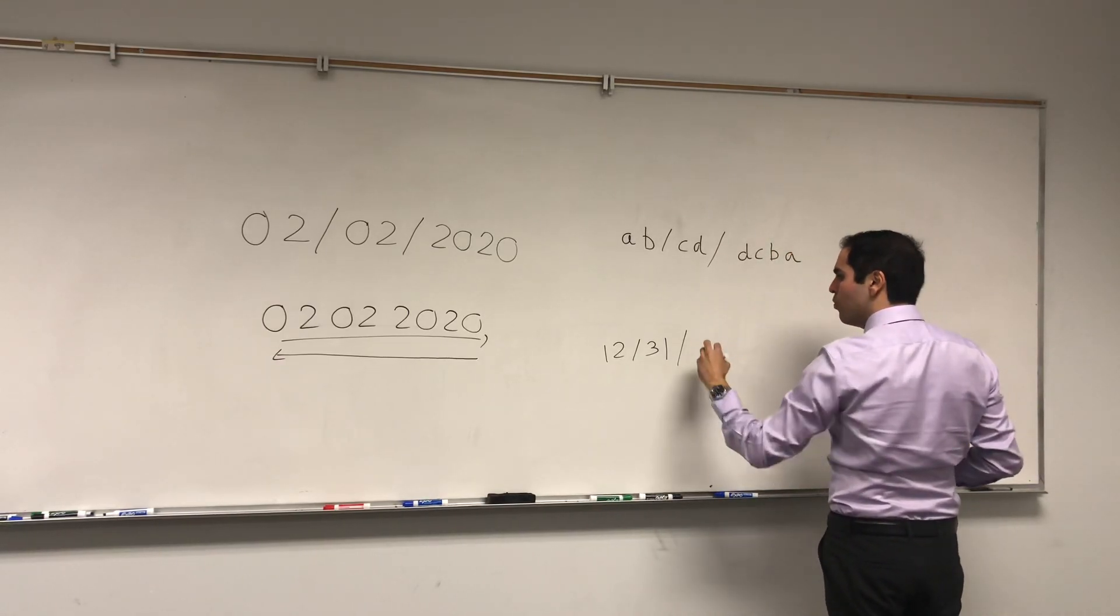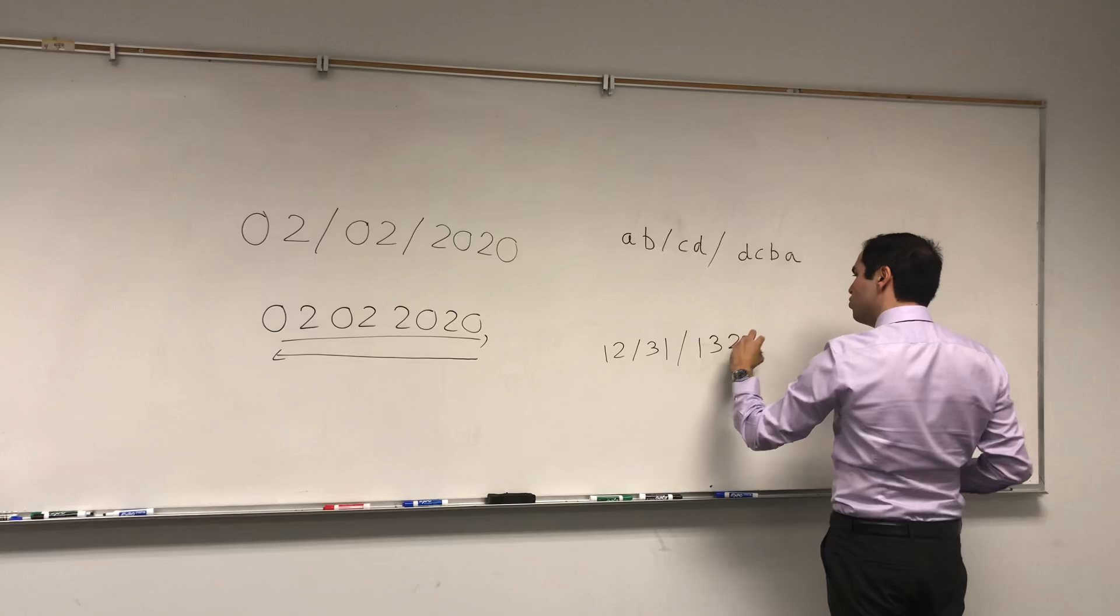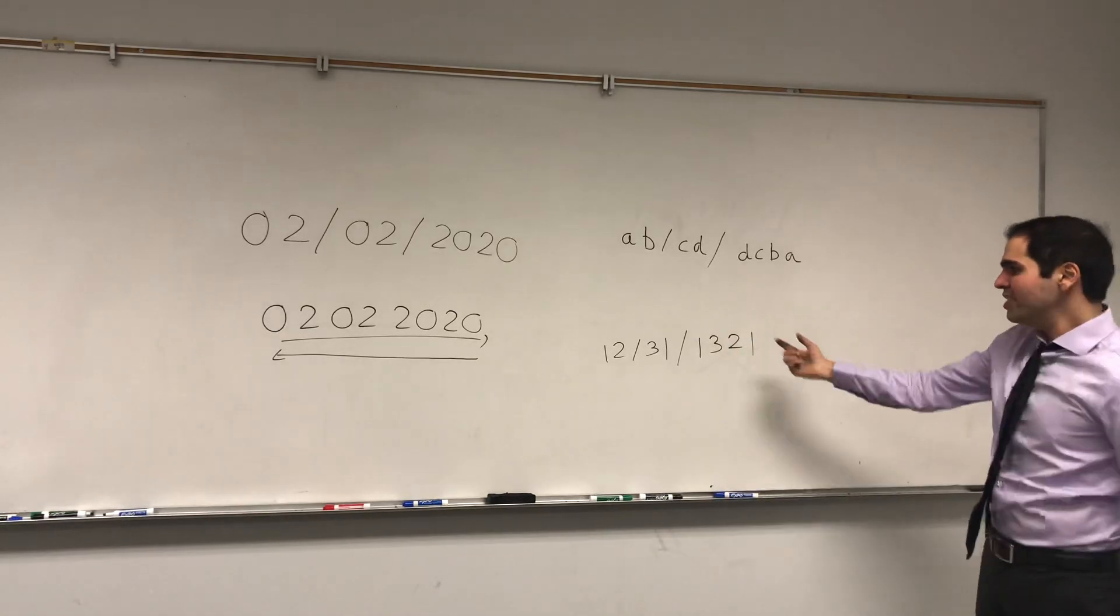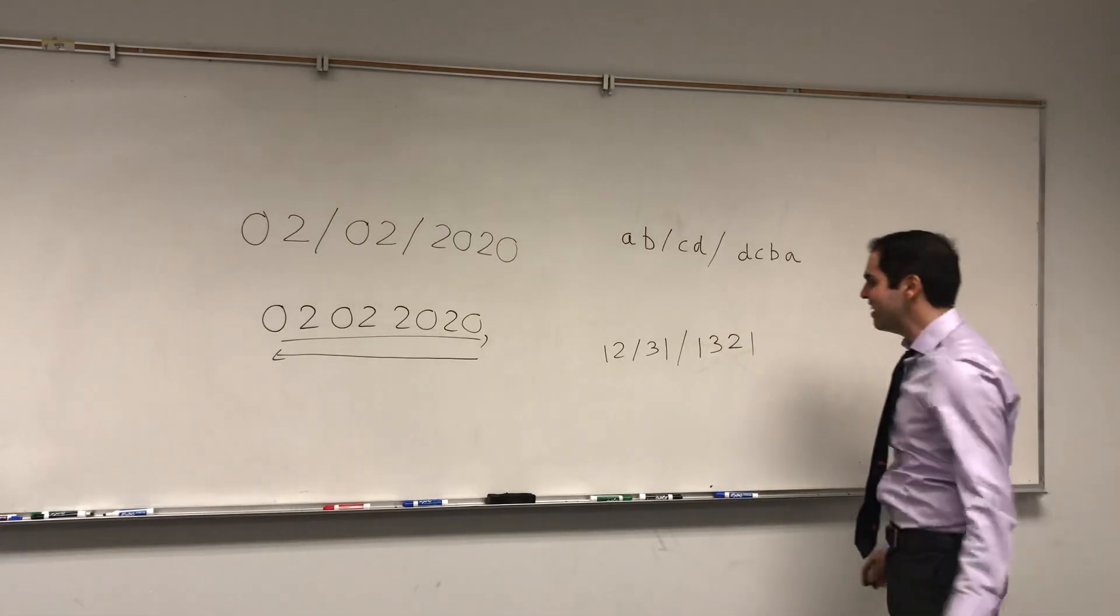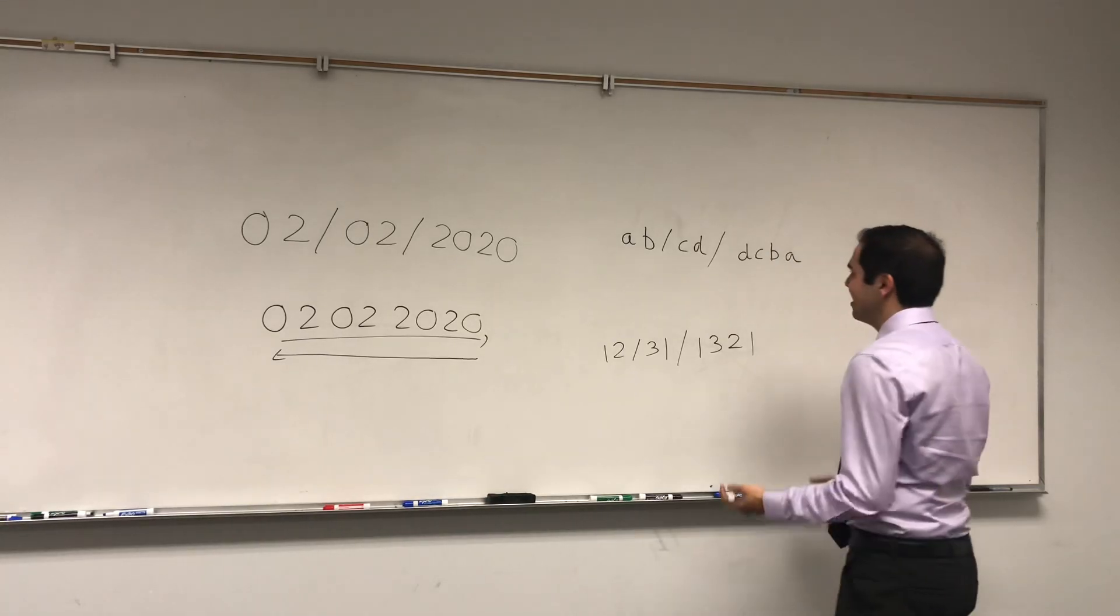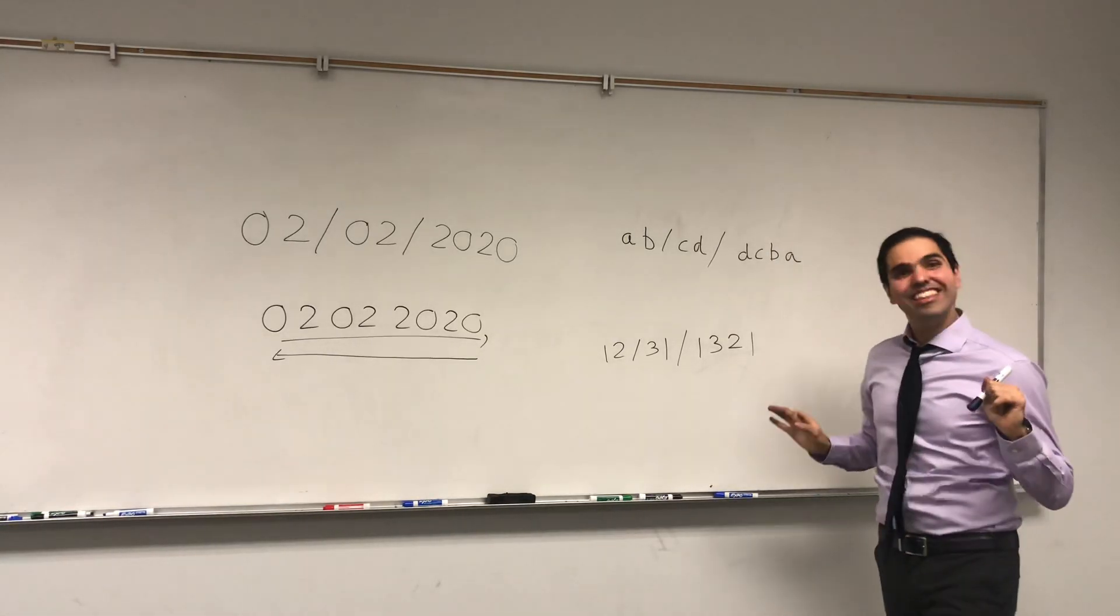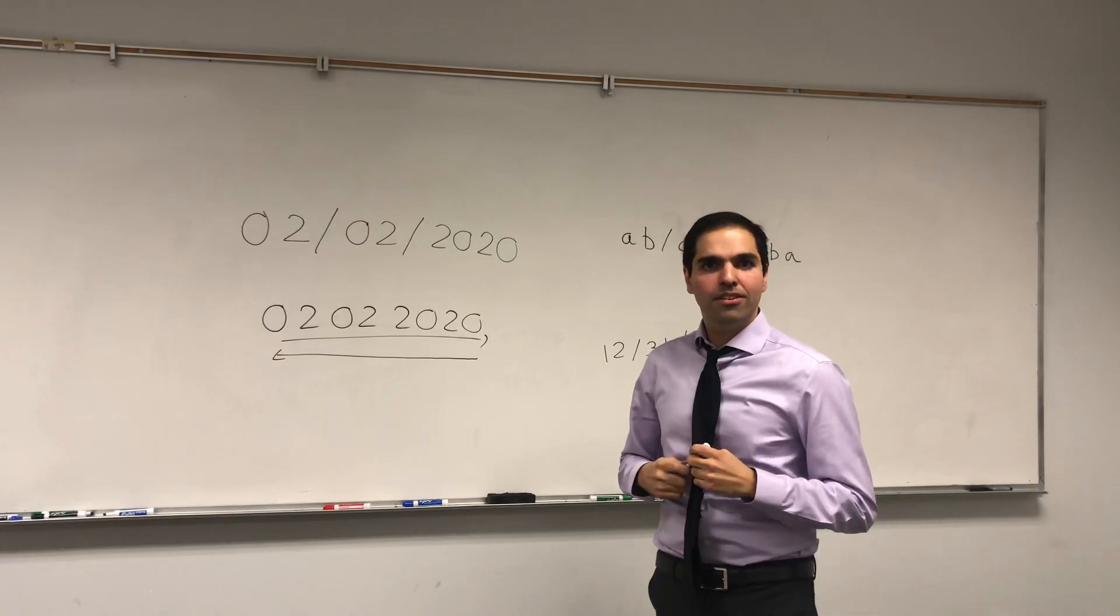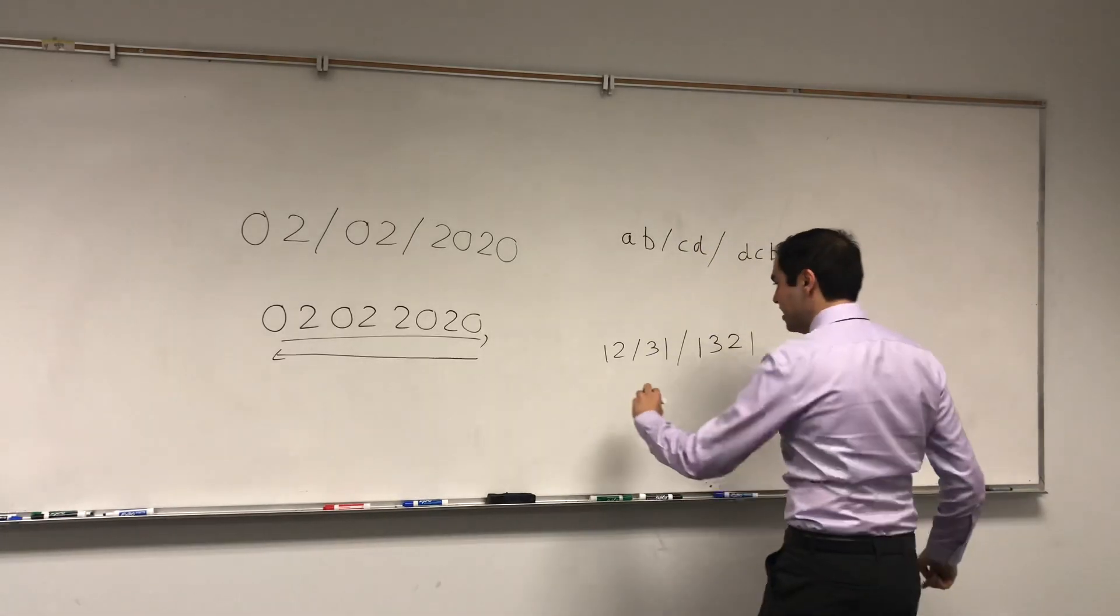Let's say December 31st. And the question is, how do you build the palindrome? Well, you just reverse this DCBA. So 1, 2, 3, 1 becomes 1, 3, 2, 1, which you can read from left to right and right to left.